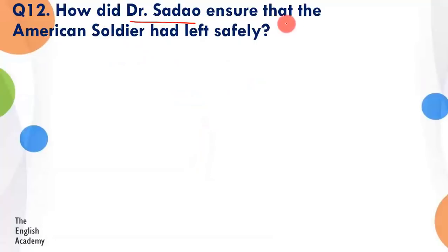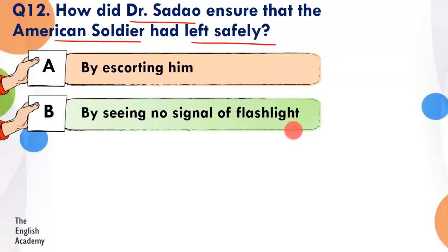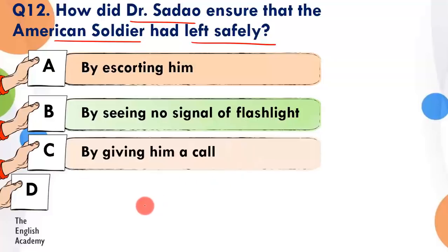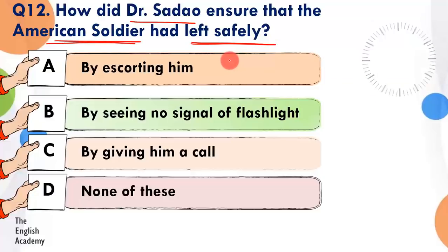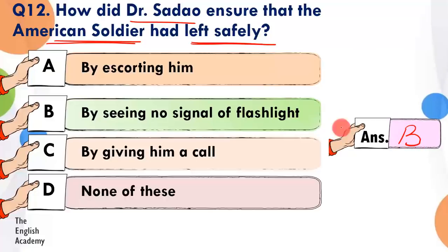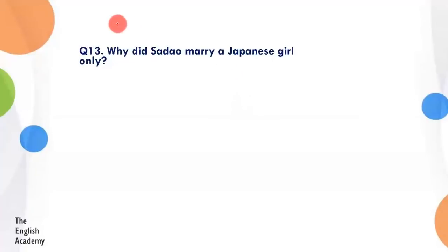Question number 12: How did Dr. Sadao ensure that the American soldier had left safely? Option A: by escorting him. Option B: by seeing no signal of flashlight. Option C: by giving him a call. Option D: none of these. The answer is Option B — unhein flashlight, yaani torch ka koi signal nahi mila. Unhone us soldier ko kaha tha ki agar tum kisi khatre mein ho toh flashlight on karke mujhe signal de dena. Jab do raat tak koi signal nahi mila, unhein confirm ho gaya ke woh safely escape kar chuka hai.